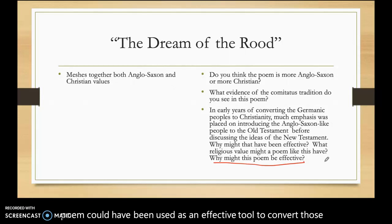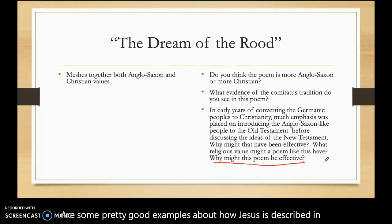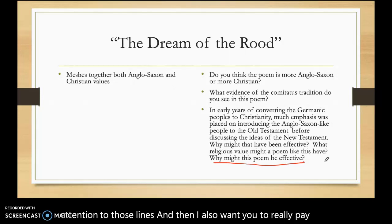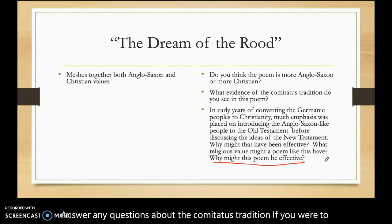A couple of lines to read closely and make sure you understand: lines 33 and 34 and lines 39 through 42 are good examples of how Jesus is described in a warrior-like way instead of as a non-violent leader. Also pay close attention to lines 65 through 80 — those lines really set forth a precedent for the comitatus relationship and should help you answer any questions about the comitatus tradition on a midterm exam. That is it for this week. If you have any questions, please email me and I'll be happy to answer. Thanks!